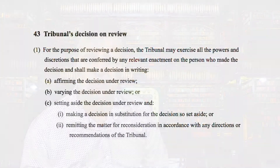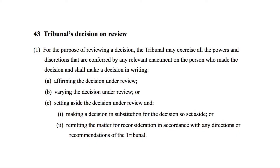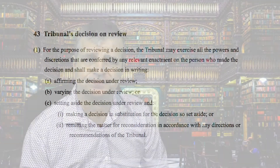If the AAT undertakes merits review, it can do three things. These powers are set out in section 43, subsection 1 of the AAT Act. It can affirm the decision under review. It can vary the decision under review. It can set the decision aside and make a completely new decision as a substitute. And it can send the decision back to the original decision maker, along with any directions or recommendations. In short, the AAT can do virtually whatever it likes in relation to the decision under review.